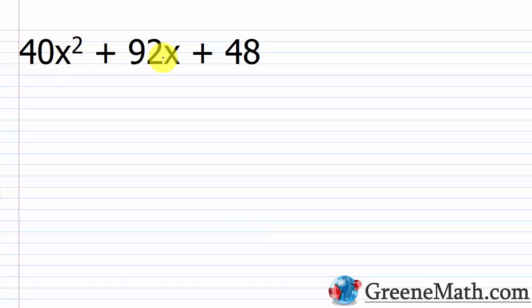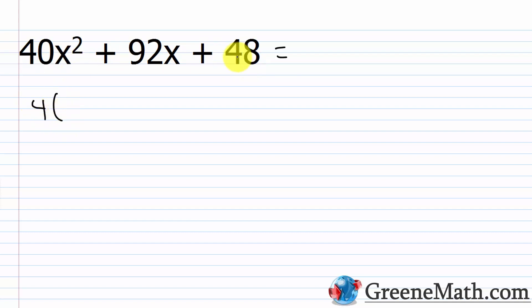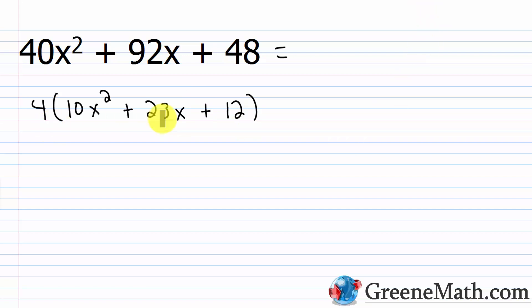Now we have 40x² + 92x + 48. The first thing to notice is that every number — 40, 92, and 48 — is even. We can pull out a GCF. Factoring them out, we find the GCF is 4, giving us 4(10x² + 23x + 12). Always pull out the GCF first; it simplifies the remaining factoring and saves work.